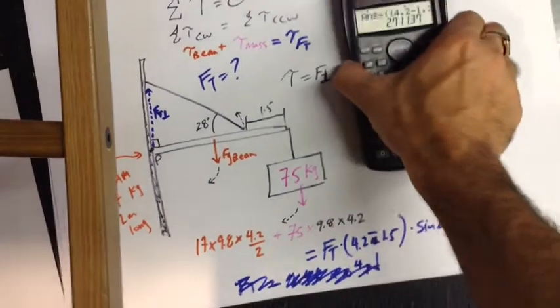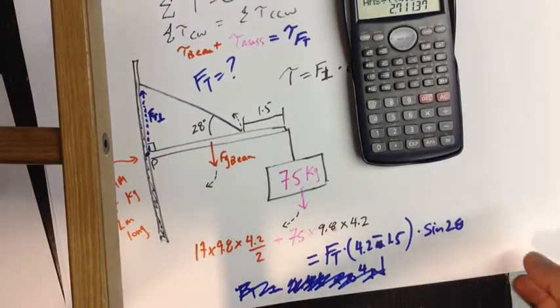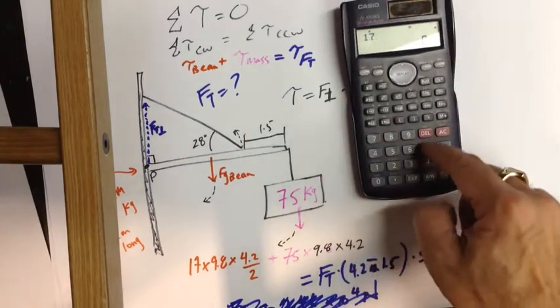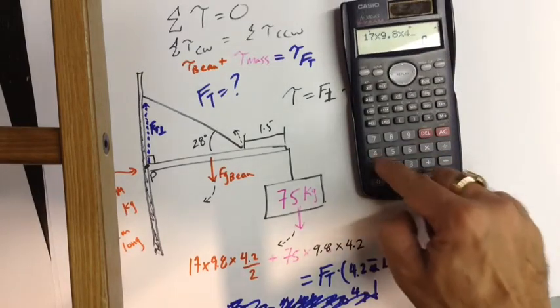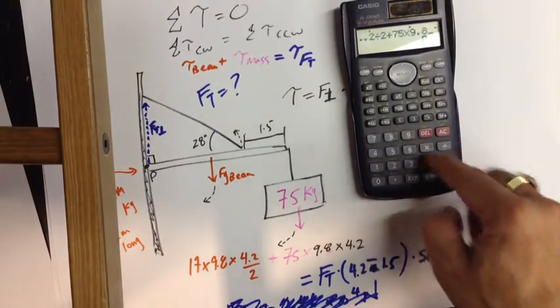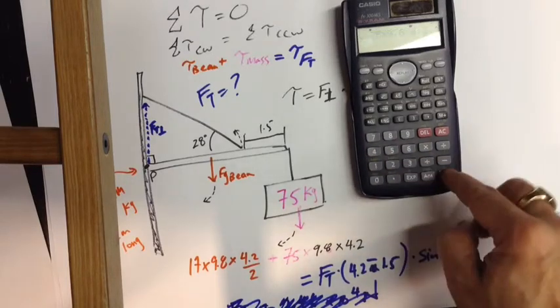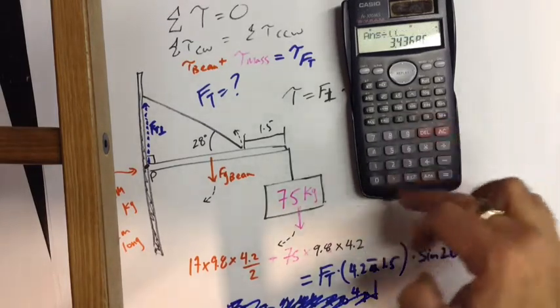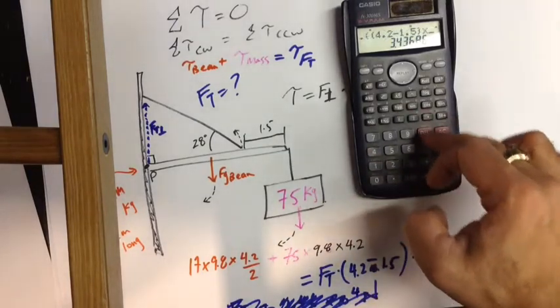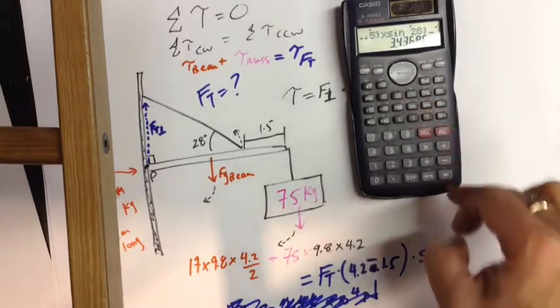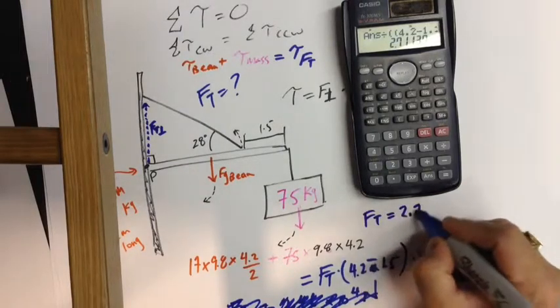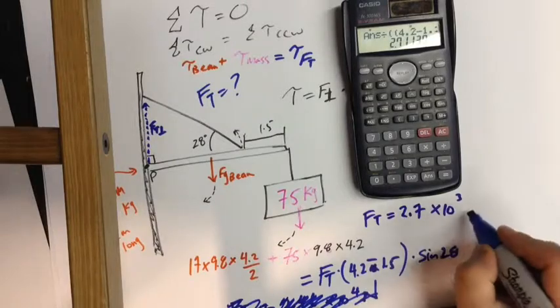So when we go to solve for Ft, we go 17 times 9.8 times 4.2 over 2, plus 75 times 9.8 times 4.2. We're going to divide that by 4.2 minus 1.5, times sine of 28. And we get a tension force that equals 2.7 times 10 to the third newtons.